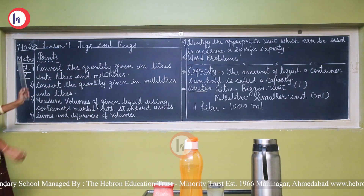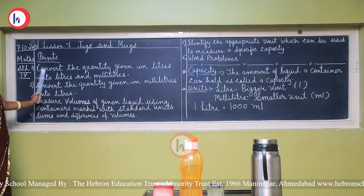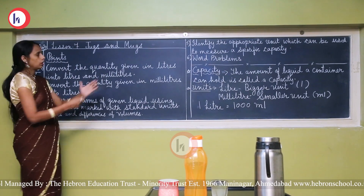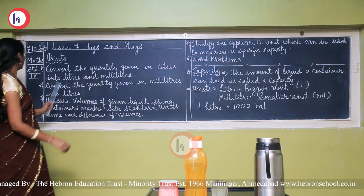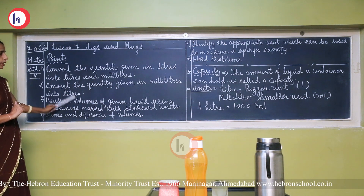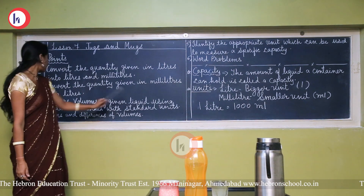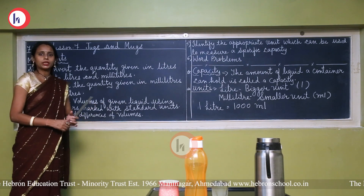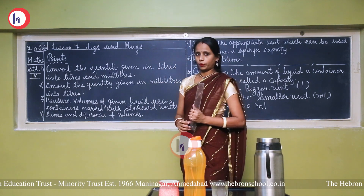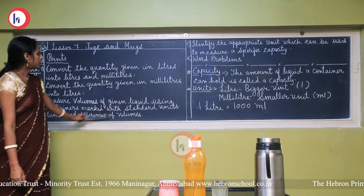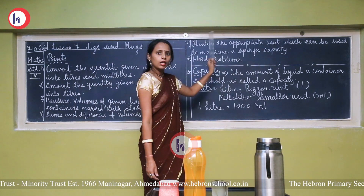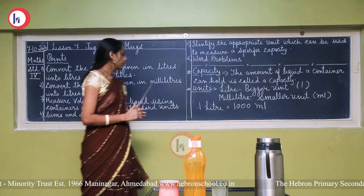Now let's come to our lesson — Jugs and Mugs. In this lesson we will learn about these points: first, convert the quantity given in liters into liters and milliliters; second, convert the quantity given in milliliters into liters; third, measure volumes of given liquid using containers marked with standard units; fourth, find sums and differences of volume; and fifth, identify appropriate units to measure specific capacity, and solve word problems.